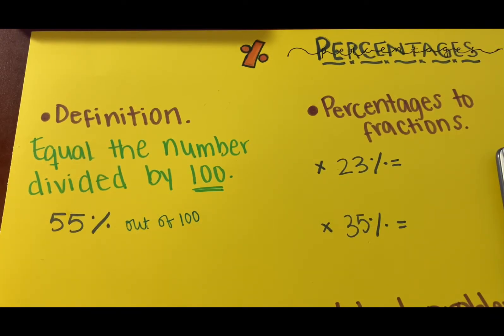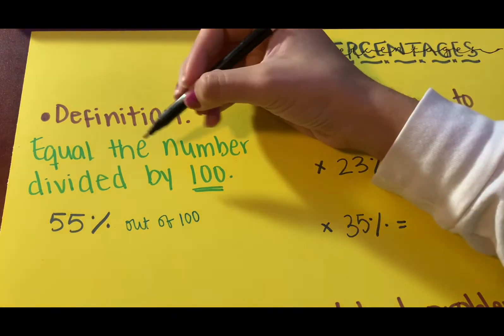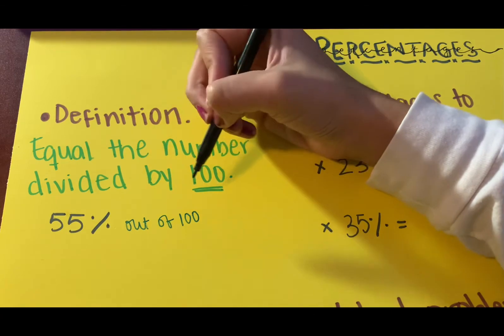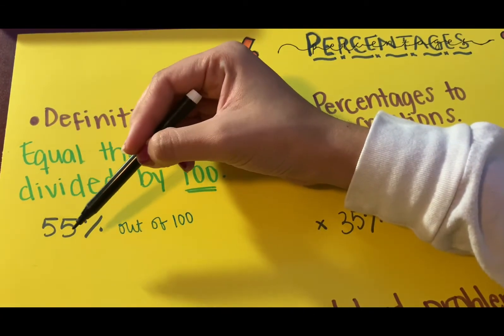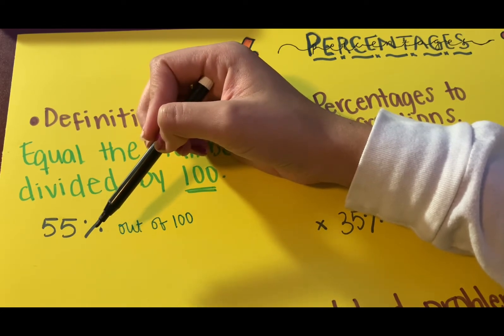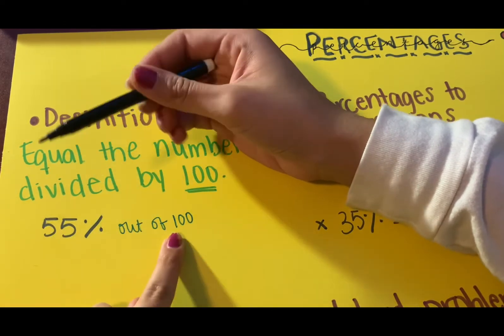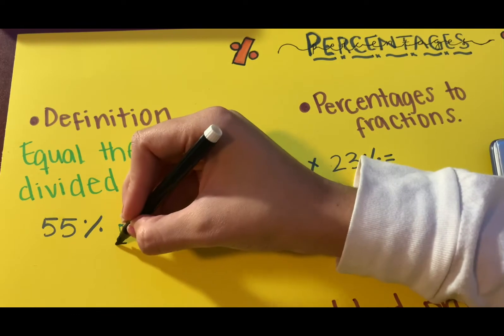The definition is that percentages always equals the number they give you divided by 100, always by hundreds. So for example, if you have 55 percent, that means 55 out of 100. So the way you write it is 55 over 100. That's what it means.